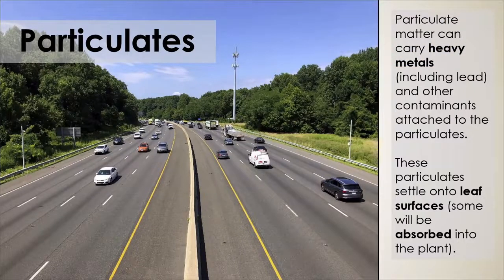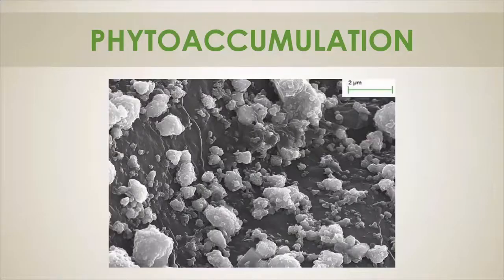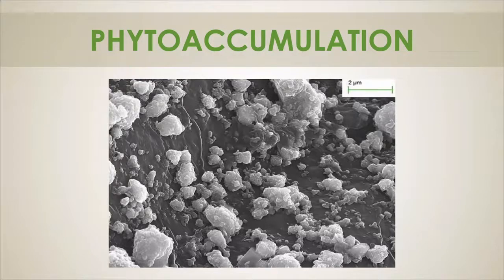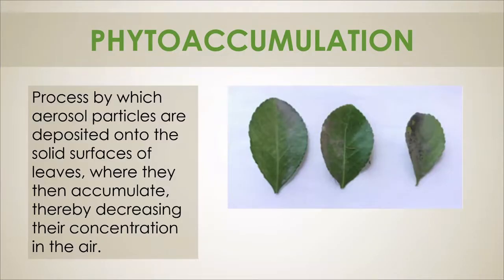These particles can also attach to other contaminants such as heavy metals, including lead. When particulates settle onto leaf surfaces, some of them can be absorbed into the plant. That's where we want to bring in a type of phytotechnology called phytoaccumulation. This is a microscopic image of a leaf with particulate matter shown at about two micron scale — these would be the PM2.5 particles. Phytoaccumulation is the process where aerosol particles are deposited onto the solid surfaces of leaves, where they are accumulated, decreasing their concentration in the air — basically using leaves to catch these particles.